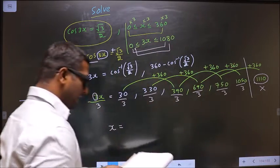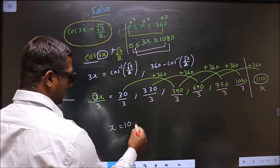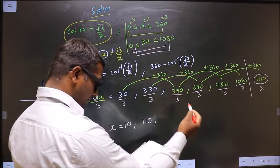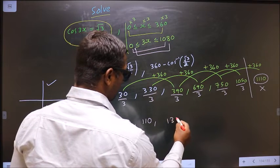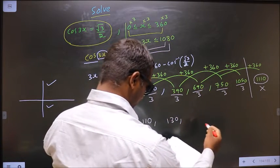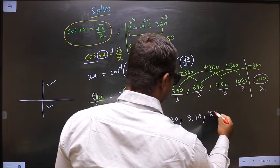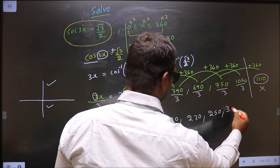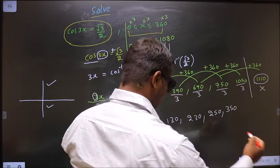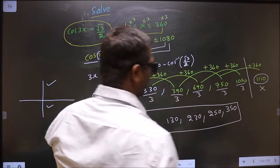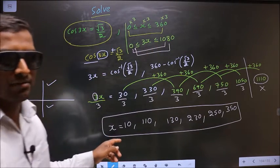So we get 10 and here 110 here, 130 here, 230 here, 250 and here 350, 250. This is our answer.